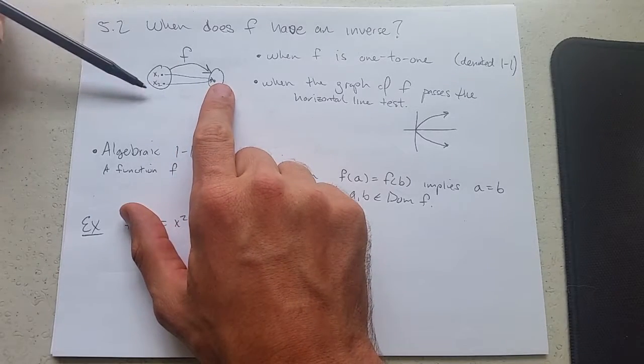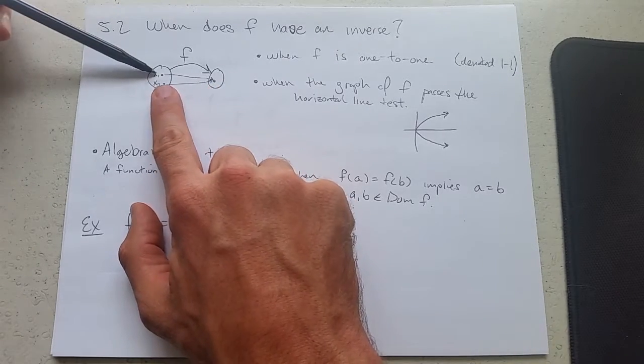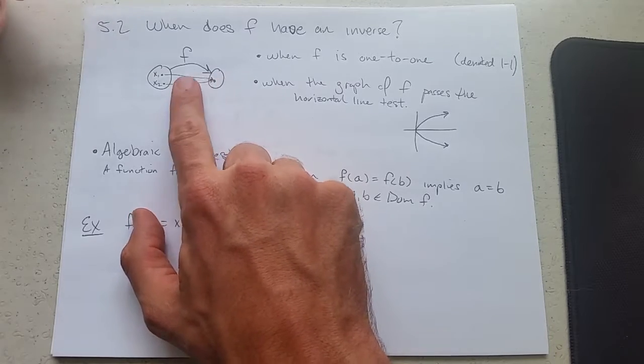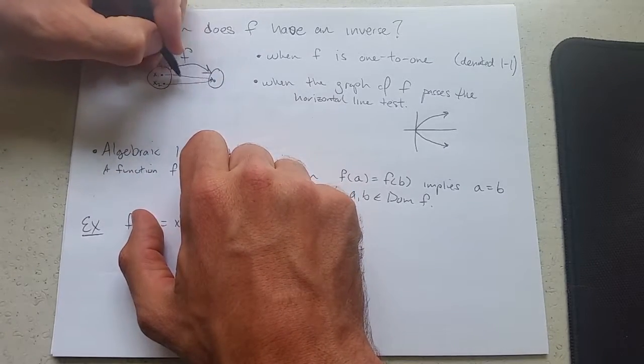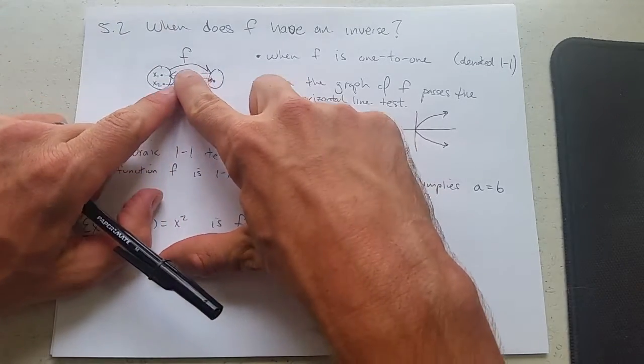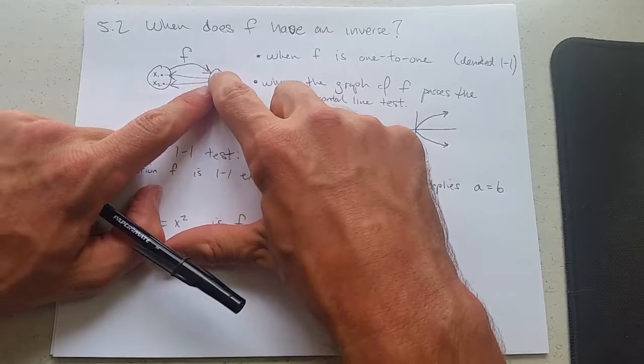We think about functions written out like this. If there are two x values that go to a single y value and I turn these arrows around.